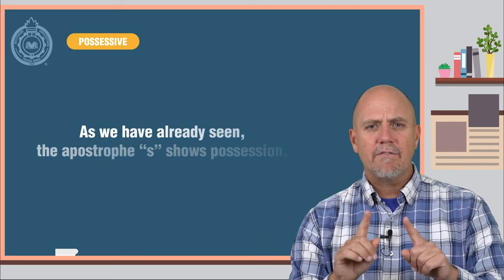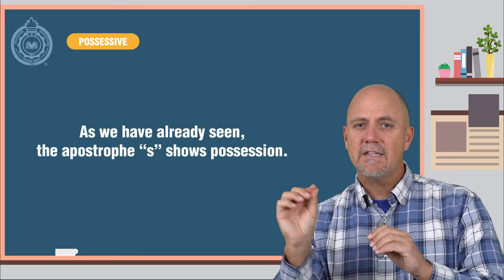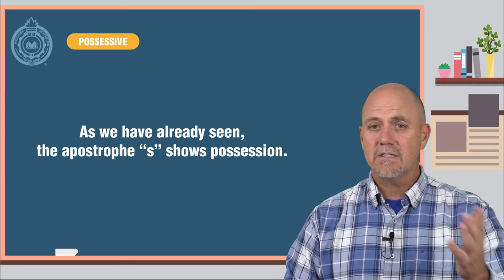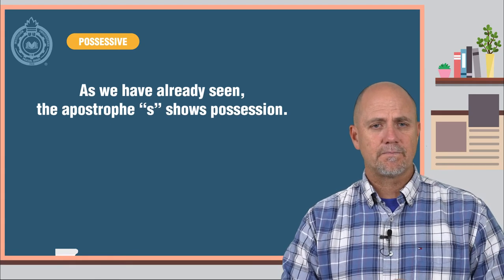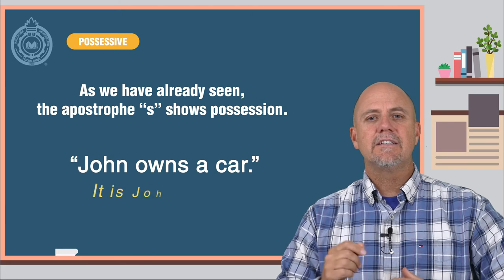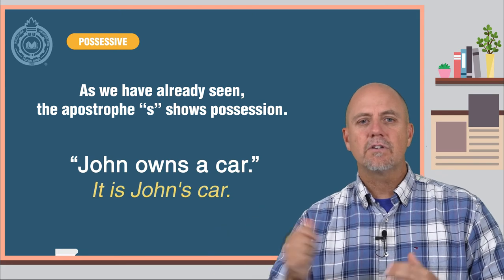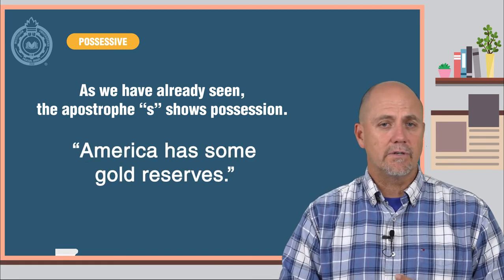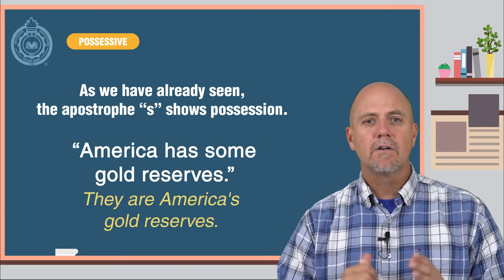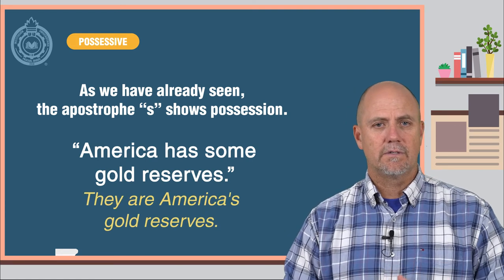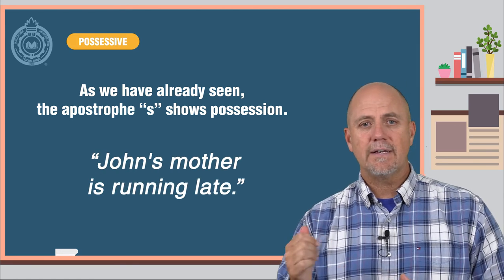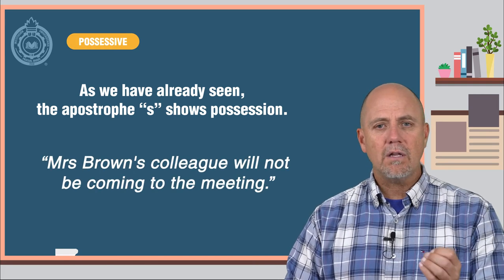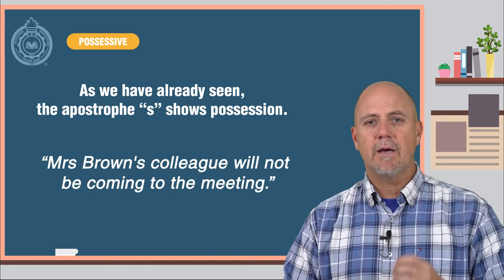As we have already seen, the apostrophe s shows possession. Look at these examples. John owns a car — it's John's car. America has some gold reserves — they are America's gold reserves. John's mother is running late. Mrs. Brown's colleague will not be coming to the meeting.